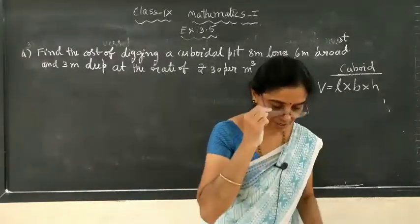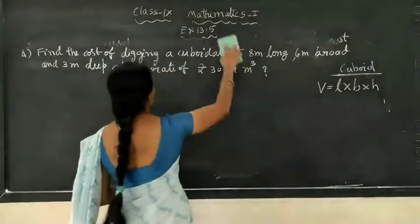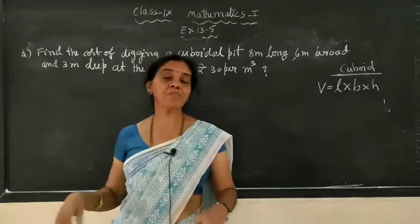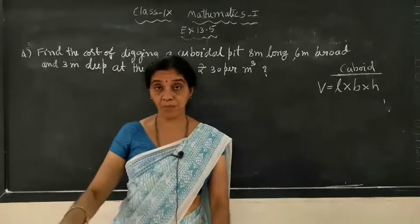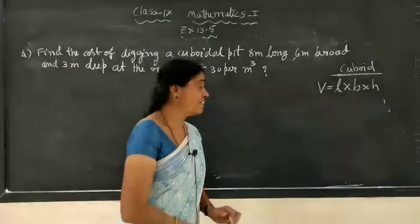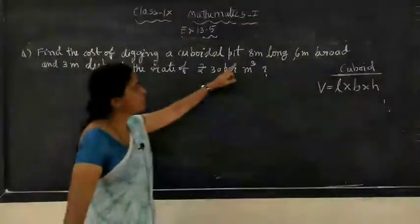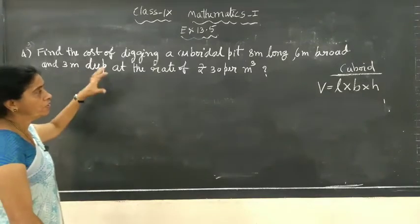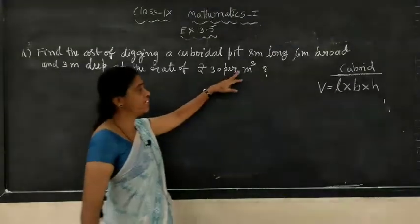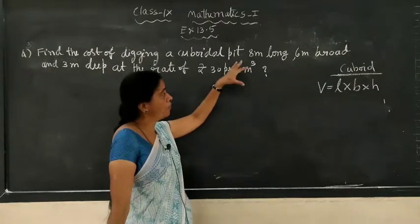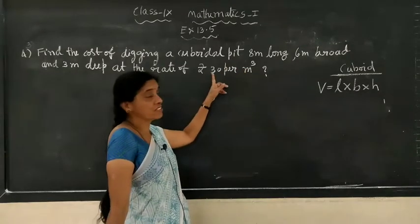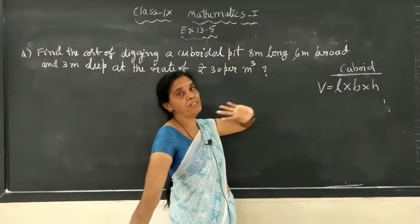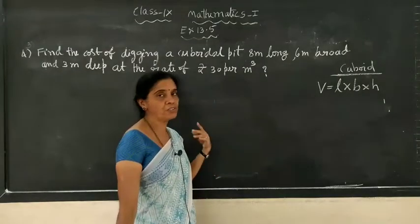They want to construct one pit. Its shape is cuboidal and its measurements are given — length, breadth, and height. Deep means depth is nothing but the height, okay. So length is 8 meters, breadth is 6 meters, and depth (height) is 3 meters. The rate is given — rate means cost. If you want to dig 1 cubic meter volume, you have to pay the worker rupees 13. Using this rate, you calculate exactly how much you have to pay for a pit of this measurement.